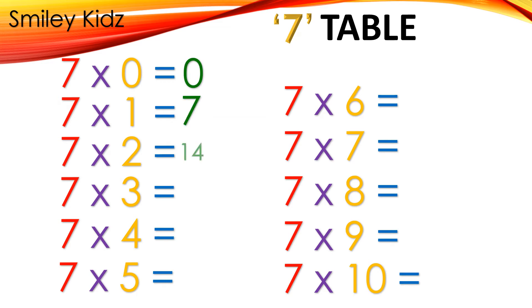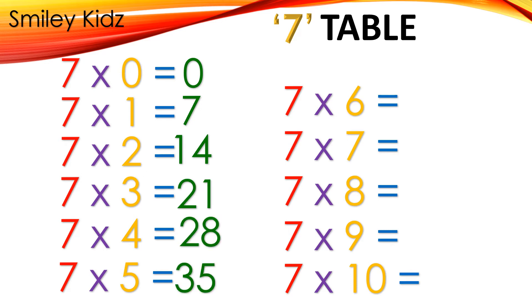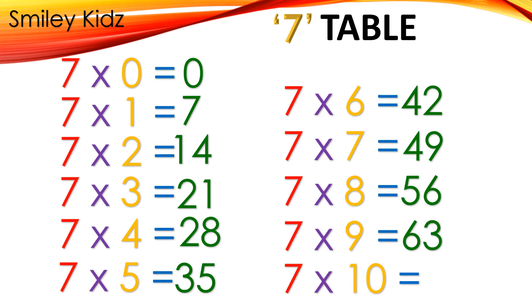Table 7: 7×0=0, 7×1=7, 7×2=14, 7×3=21, 7×4=28, 7×5=35, 7×6=42, 7×7=49, 7×8=56, 7×9=63, 7×10=70.